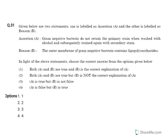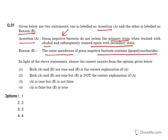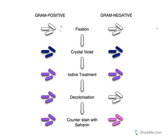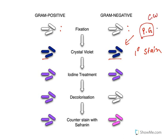This is an assertion-and-reason type question. Assertion: Gram-negative bacteria do not retain the primary stain when washed with alcohol and subsequently stained with the secondary stain. Reason: The outer membrane of gram-negative bacteria contains lipopolysaccharides. In gram staining, bacteria are first stained with crystal violet (primary stain). The crystal violet color is taken up due to peptidoglycan in the cell wall. Then a mordant — iodine — is used to fix the color.